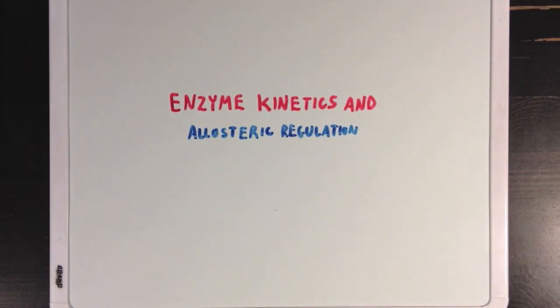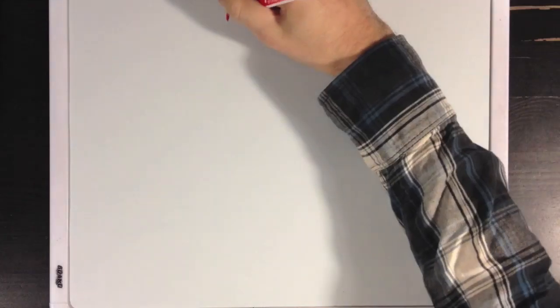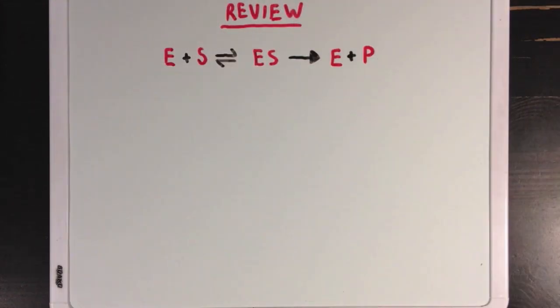So, today we're going to talk about how allosteric regulation can affect enzyme kinetics. But first, let's review the idea that an enzyme's catalysis can be divided into two steps.